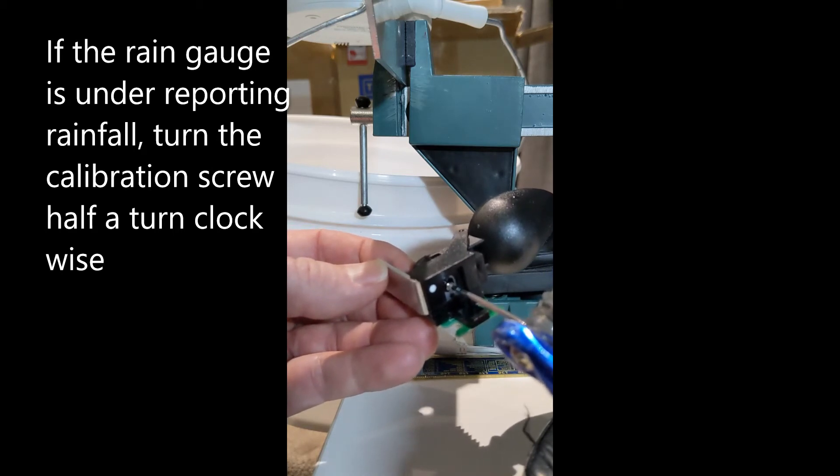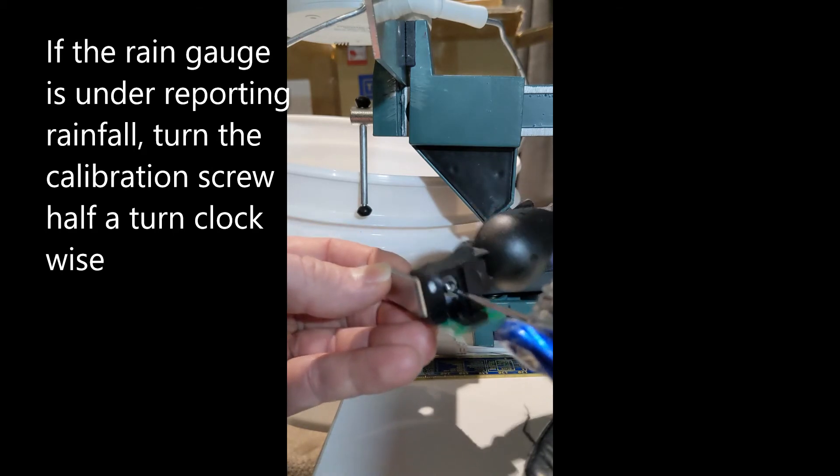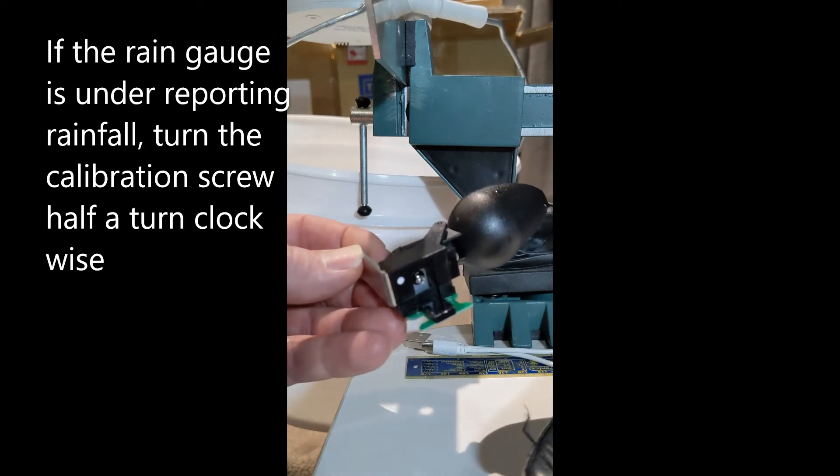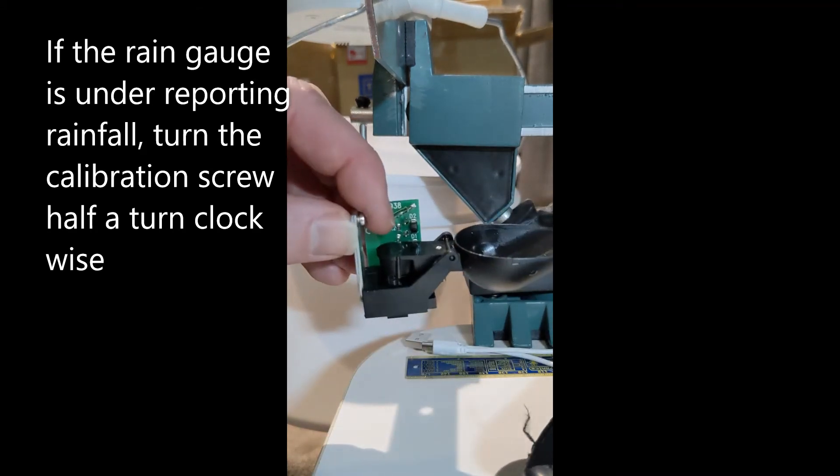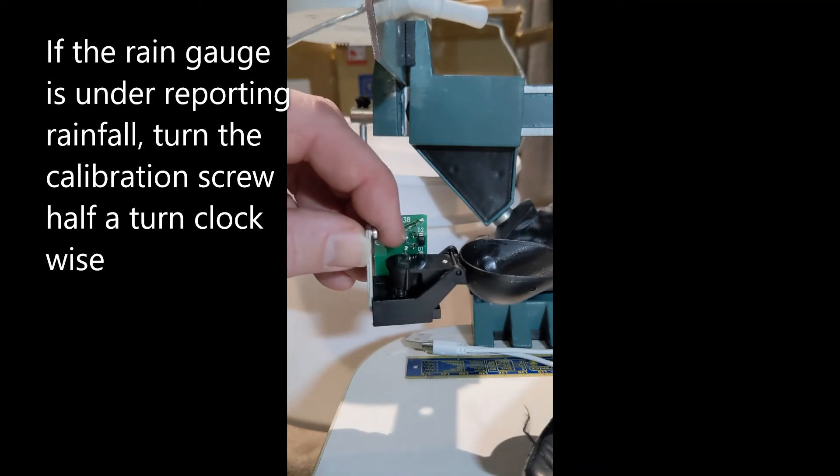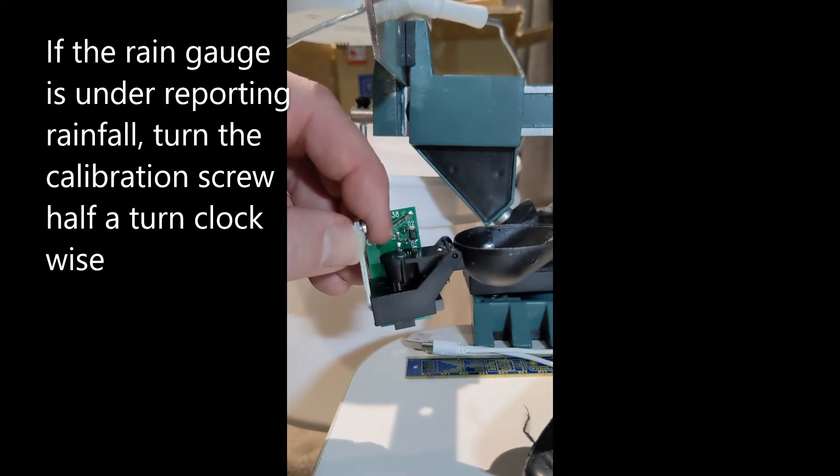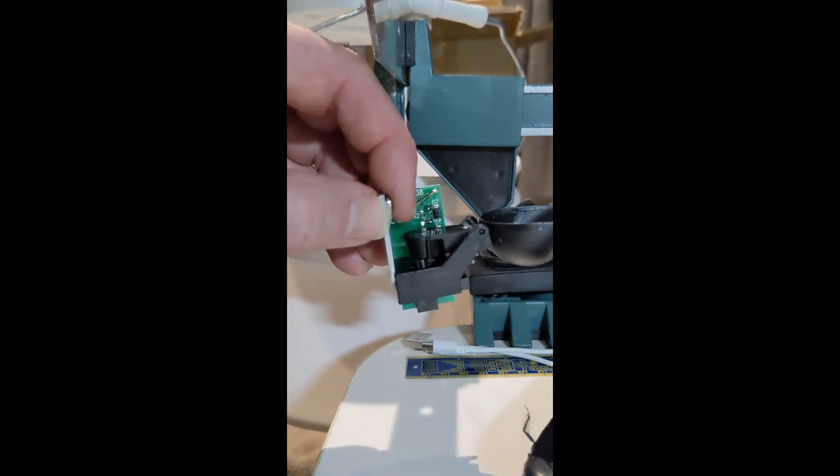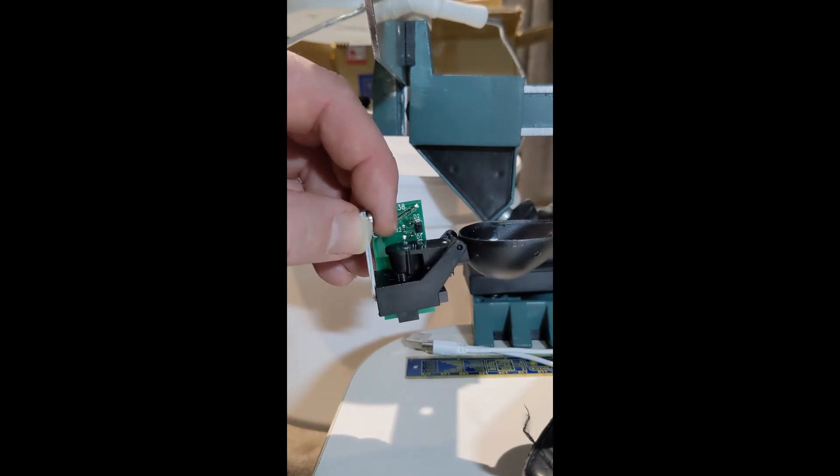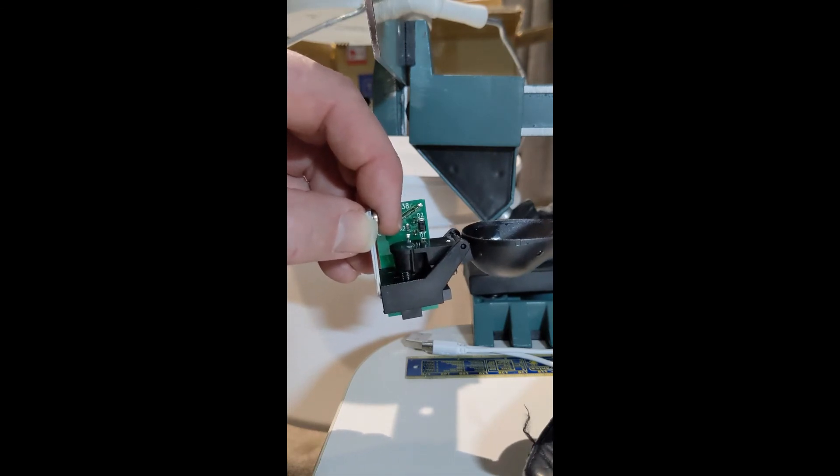Half a turn clockwise, and that will mean it's going to tip sooner - it's going to tip out when there's less water in it, which should bring it back to an accurate measurement. So that was half a turn clockwise because it was under-measuring the rainfall.